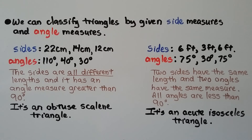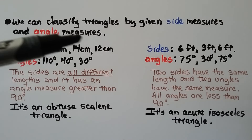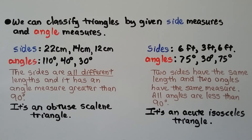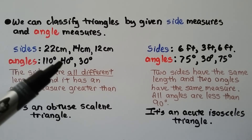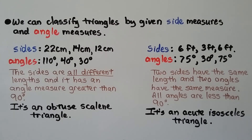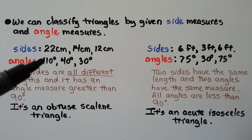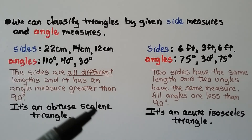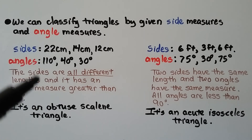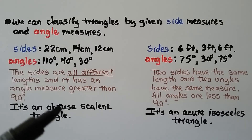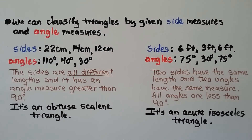We can classify triangles by given side measures and angle measures — we don't even need a picture. We're given sides of 22 centimeters, 14 centimeters, and 12 centimeters, and angles of 110 degrees, 40 degrees, and 30 degrees. The sides are all different lengths, so it's scalene. It has an angle greater than 90 degrees, so it's obtuse. It's an obtuse scalene triangle.